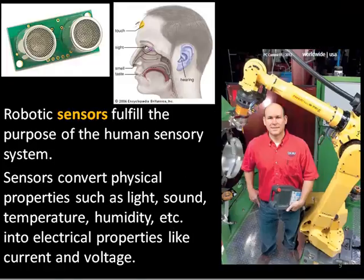The third area of study in robotics is the use of sensors and machine vision. Robotic sensors fulfill the purpose of the human sensory system by converting physical properties like light, sound, temperature, humidity, etc. into electrical properties like current and voltage.